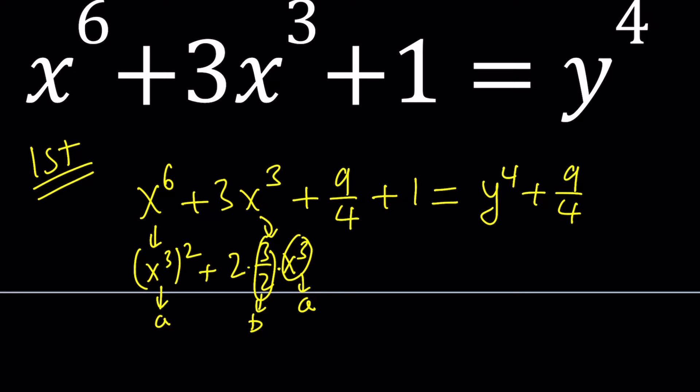Therefore, I'm supposed to add 9 fourths to both sides. But I already have a 1 here, so I'm going to add 9 fourths to both sides. Don't worry, we're going to go ahead and fix it real quick. Now, what is 9 fourths plus 1? It's 13 fourths. But don't do it. Instead, just go ahead and bring this 9 fourths over here and subtract it.